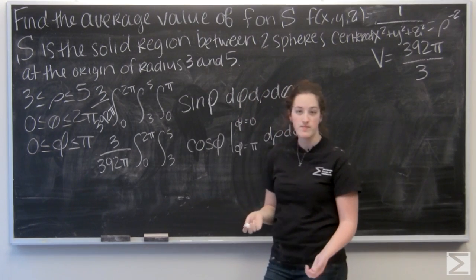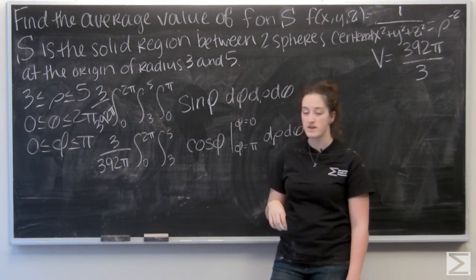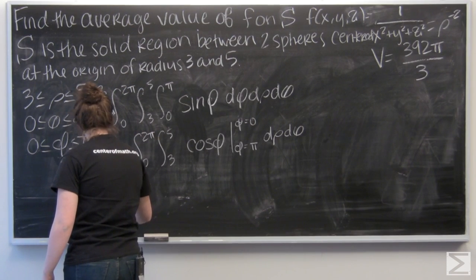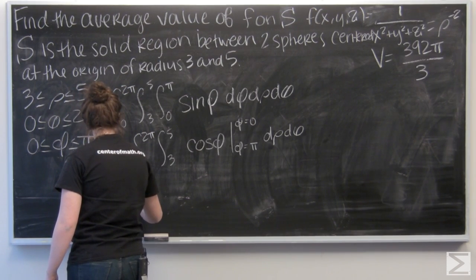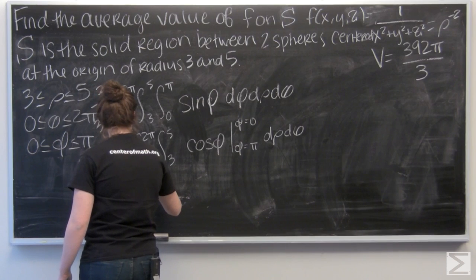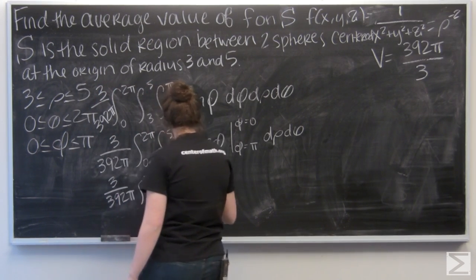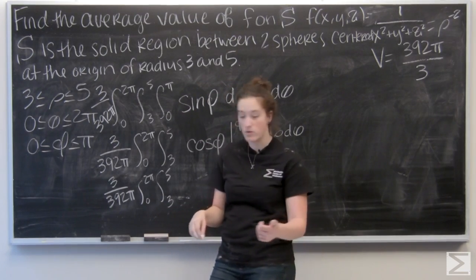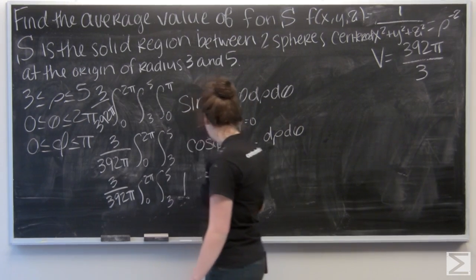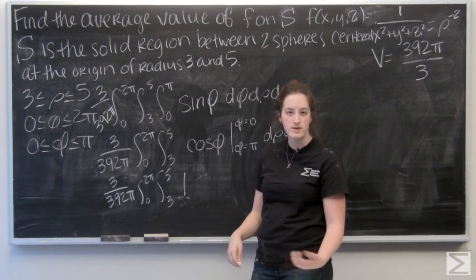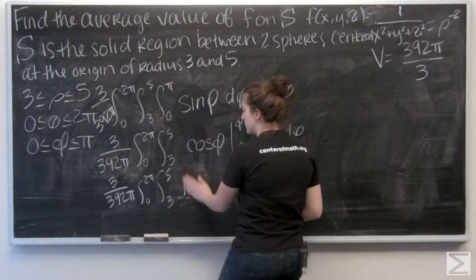So let's go ahead and plug in. I'm looking at phi equals zero first. And cosine of zero is one. Then I have cosine of pi, which is negative one. So I'm subtracting a negative one, which is like adding one. So I'm actually going to get two here.